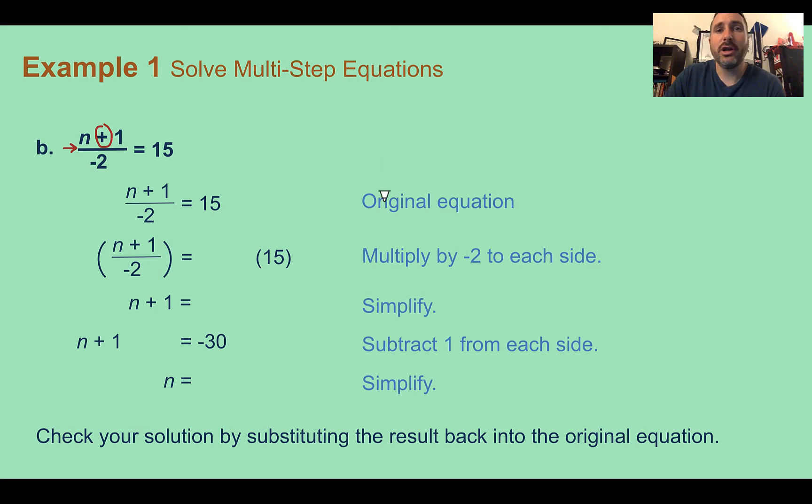If you come across a problem like this that looks like a complex fraction, you're actually going to want to do the multiplication first. I know that doesn't necessarily fit with the whole reverse order of operations, but it's going to make it a lot simpler. So if we multiply each side by negative 2, and whatever we do on one side, we have to do on the other, I have negative 2 divided by negative 2. Those make 1, so essentially I just multiply by 1. I'm left with what was in the numerator or on top. And then negative 2 times 15 is negative 30.